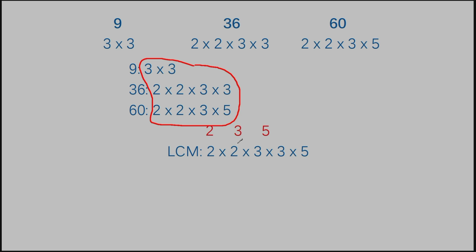Now for the 3: the 9 has two 3's, the 36 has two 3's, and the 60 has only one 3 — so two was the most. Write two 3's down with multiplication signs. For the 5: it was only represented once, so write one 5 down. Then multiply all these numbers together, and for this example you get 180.